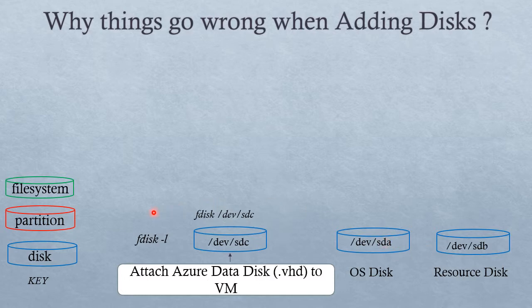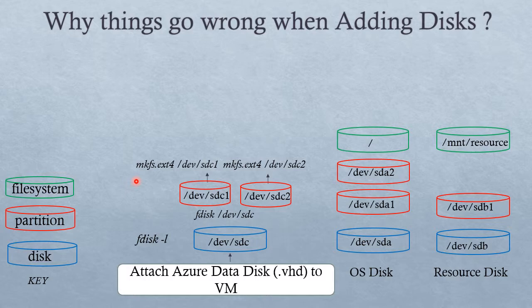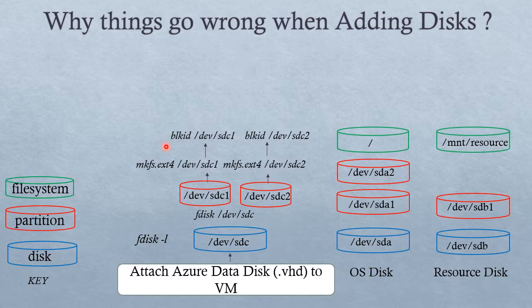We can then create partitions on our new device using the fdisk or parted command. Here we have created two partitions: sdc1 and sdc2. We then create file systems on our partitions — here we are creating Linux file systems of type ext4. We then obtain the unique identifier using the blkid command, which is required to identify the device and will always reference the exact underlying device.